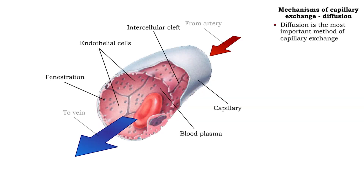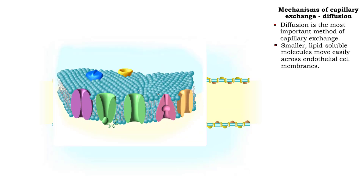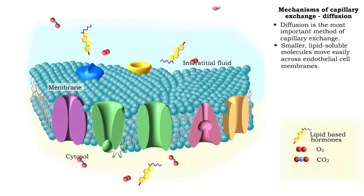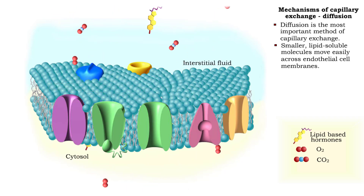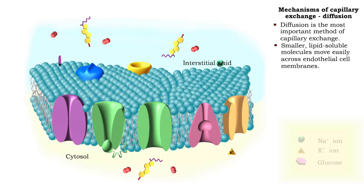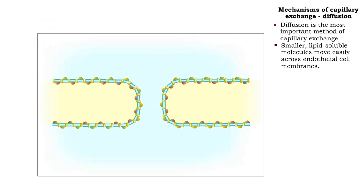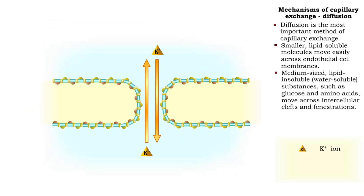The most important method of capillary exchange is diffusion. Oxygen, carbon dioxide, steroid hormones, and other lipid-soluble substances pass through endothelial cell membranes. Glucose, amino acids, and other water-soluble substances diffuse through intercellular clefts and fenestrations.